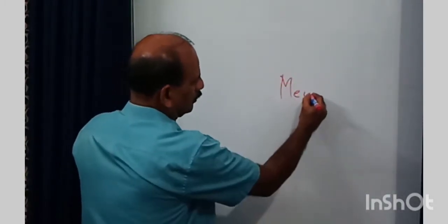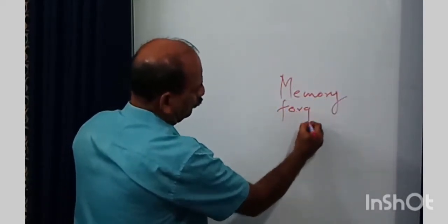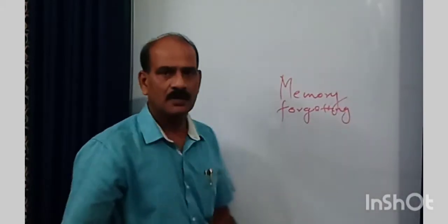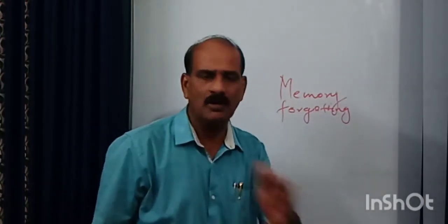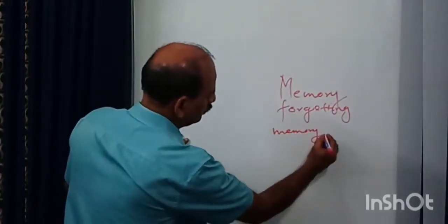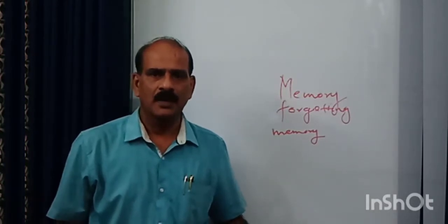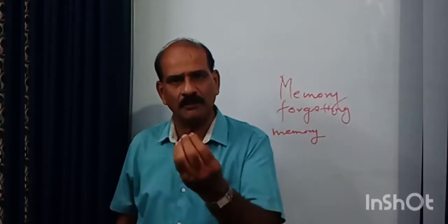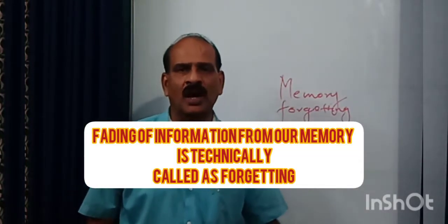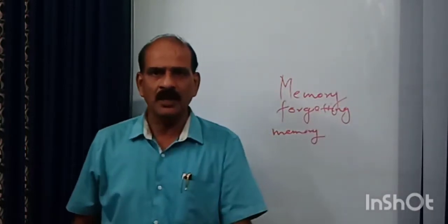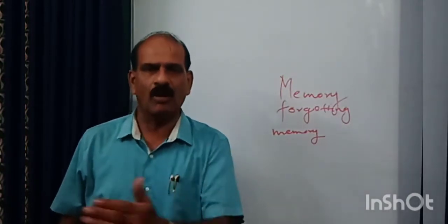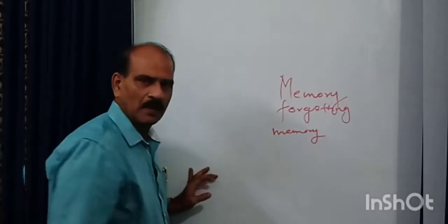Hello, welcome everyone. This session introduces a new topic: memory and forgetting. What we learn is stored in our brain — this process is technically called memory. But after learning, we remember only selective things; the remaining items are faded in our memory. This fading of information is technically called forgetting.